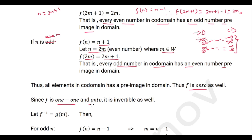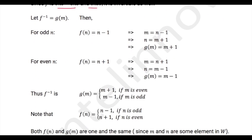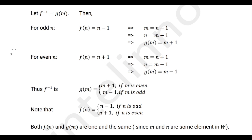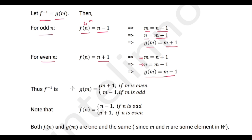Since f is one-to-one and onto, it is invertible. Now we need to find f inverse, let us call it g(m). For odd n: f(n) = n − 1. Let f(n) = m, so m = n − 1, therefore n = m + 1, which means g(m) = m + 1. For even n: f(n) = n + 1. By the same logic, g(m) = m − 1. Thus f inverse is: g(m) = m + 1 if m is even, and g(m) = m − 1 if m is odd.